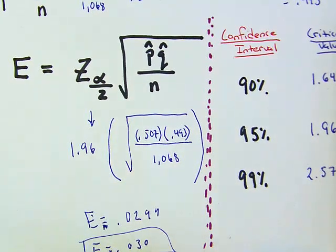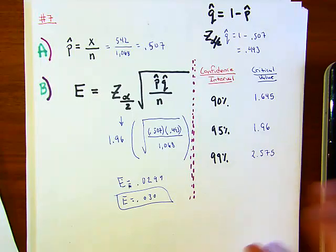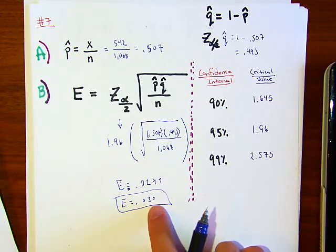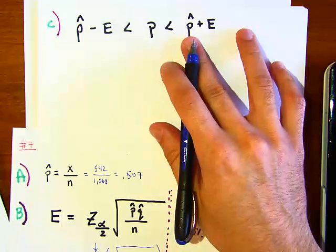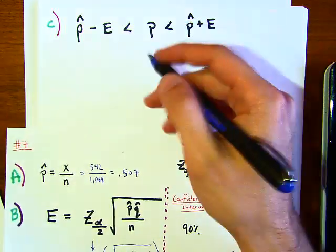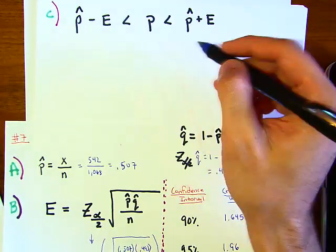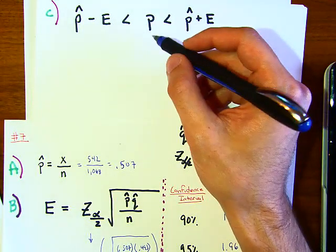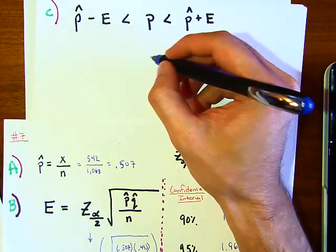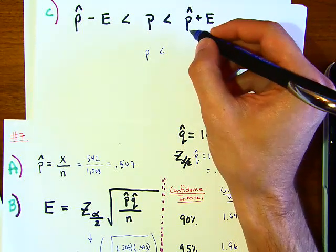We're done with part B. This is the E value. So how do we use this E value for the next part? For part C it's asking you to construct the confidence interval. This is the confidence interval for our population proportion p.